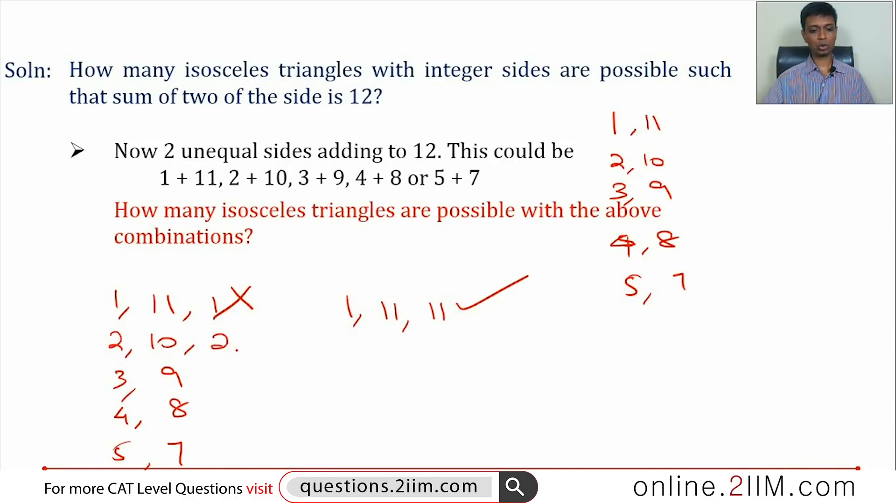Likewise, 2, 2, 10 or 2, 10, 10. This is a triangle. But 2 plus 2 is less than 10, so 2, 2, 10 is not a triangle.